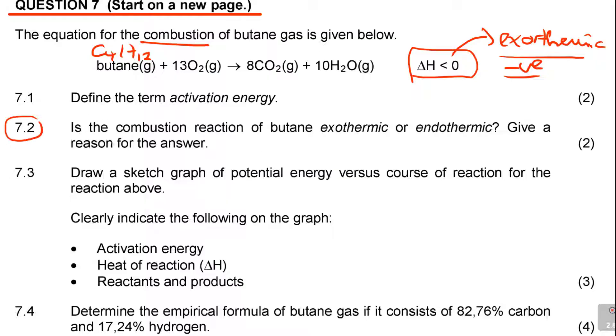7.2: Is the combustion reaction of butane exothermic or endothermic? Give a reason for the answer. I already did it. It is exothermic. Why? Then you can say because delta H is less than zero. That's the reason. You'll get your mark. Or you can say because it releases heat as delta H is less than zero or delta H is negative. But the key word there is that delta H is less than zero.